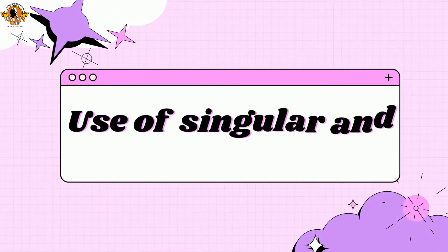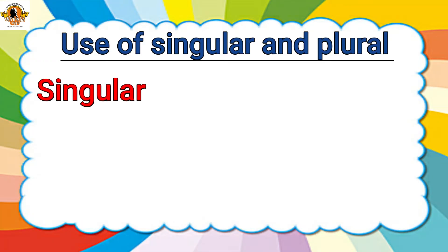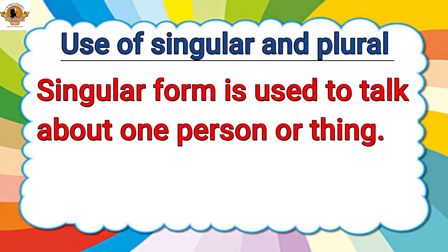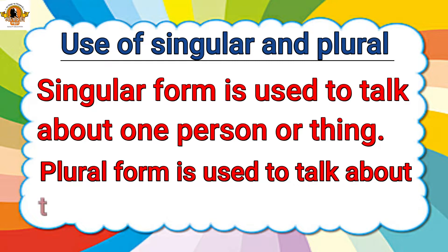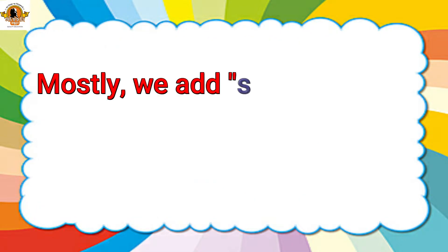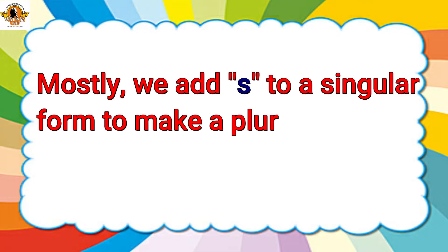Use of singular and plural. Singular form is used to talk about one person or thing. Plural form is used to talk about two or more people or things. Mostly we add S to a singular form to make a plural form.